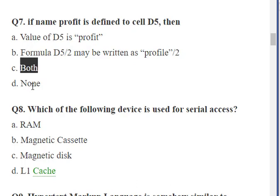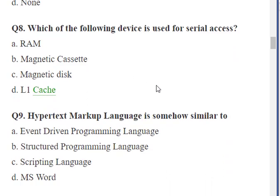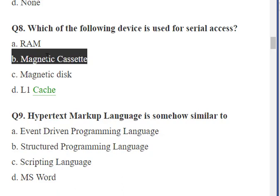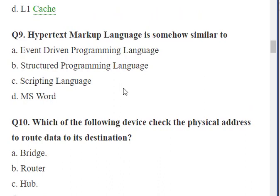Note: if the name in the question is 'profile' instead of 'profit', then 'none' would be the correct answer. Moving to question number eight: 'Which of the following devices is used for serial access?' Options are: RAM, magnetic cassettes, magnetic disc, and L1 cache. Magnetic cassettes are magnetic tapes, which are sequential by nature. RAM, magnetic disc, and L1 cache are all direct access or random access devices, so the correct answer is magnetic cassettes — option B.